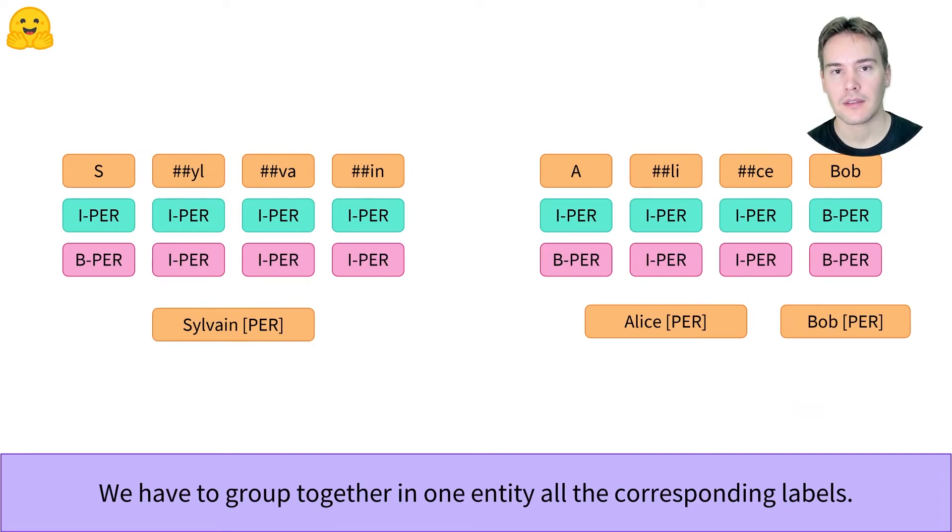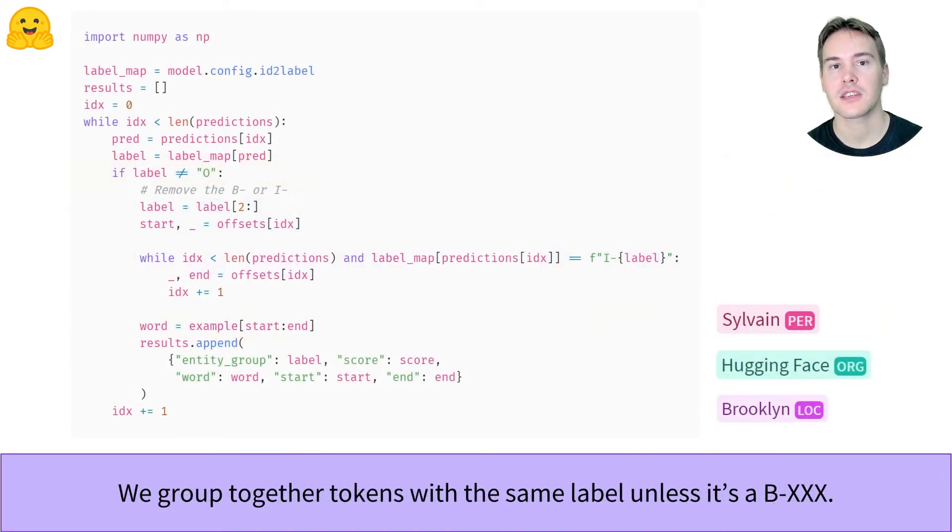In both cases, we can flag a new entity each time we see a new label appearing, either with the I or B prefix, then take all the following tokens labeled the same with an I flag. This, coupled with the offset mapping to get the start and end characters, allows us to get the span of text for each entity.